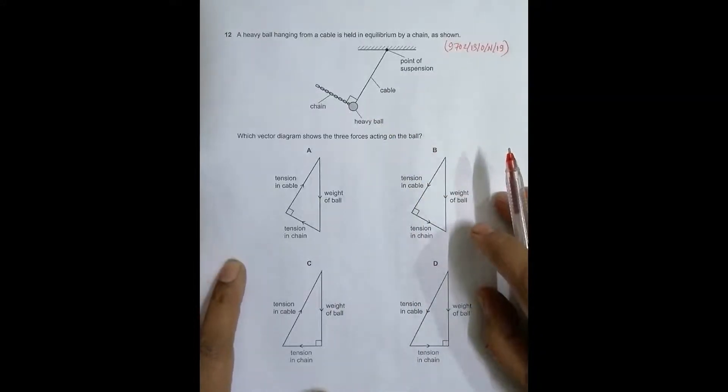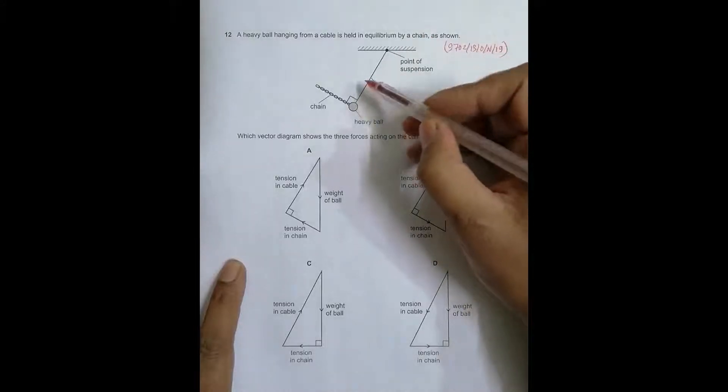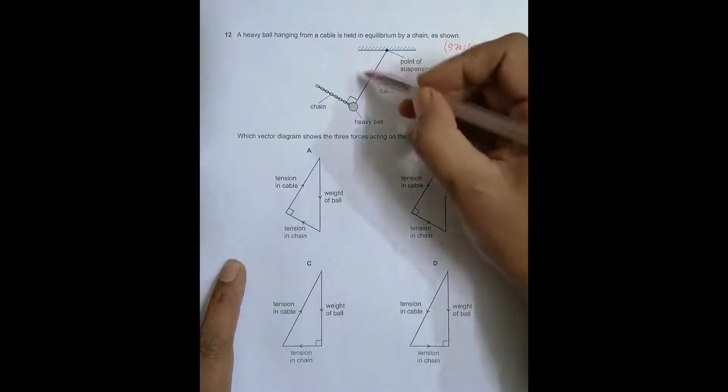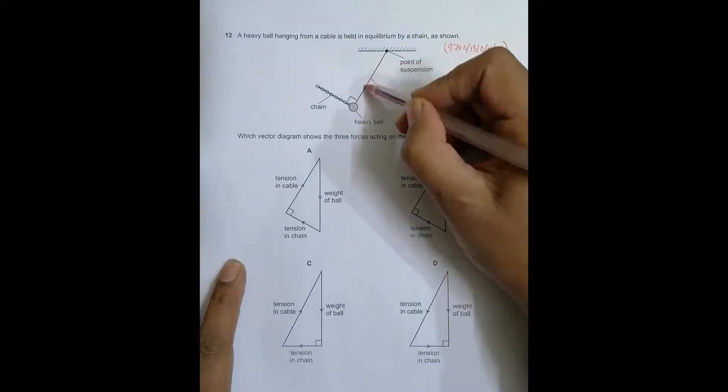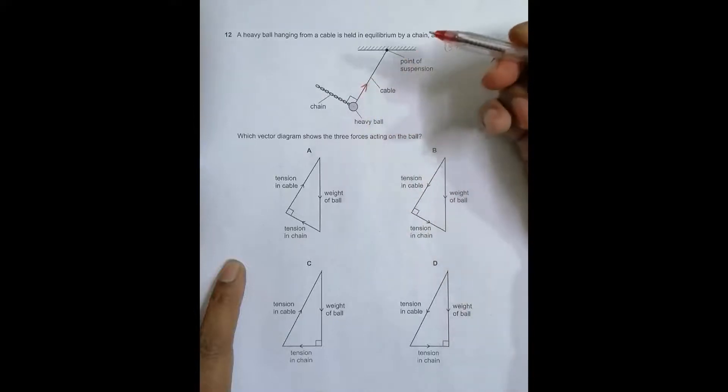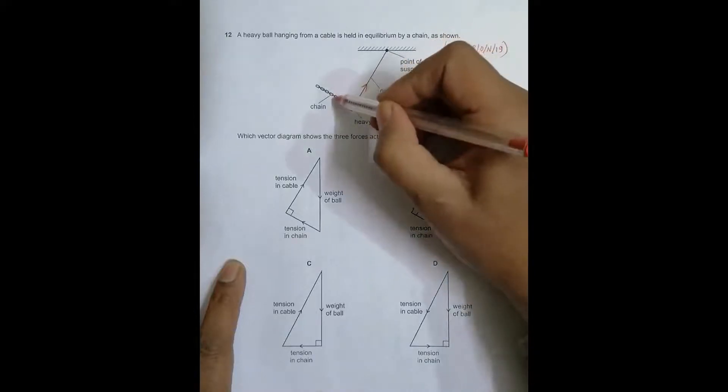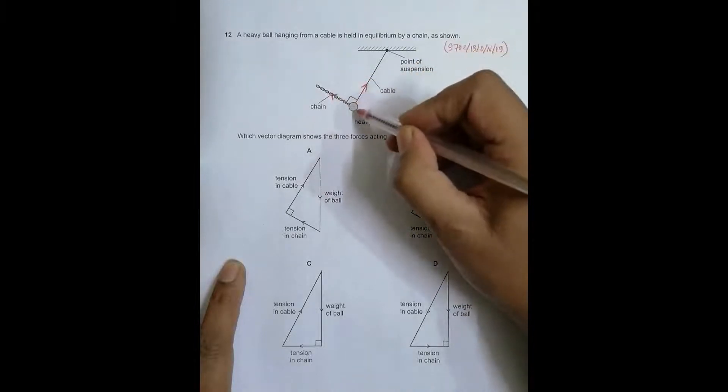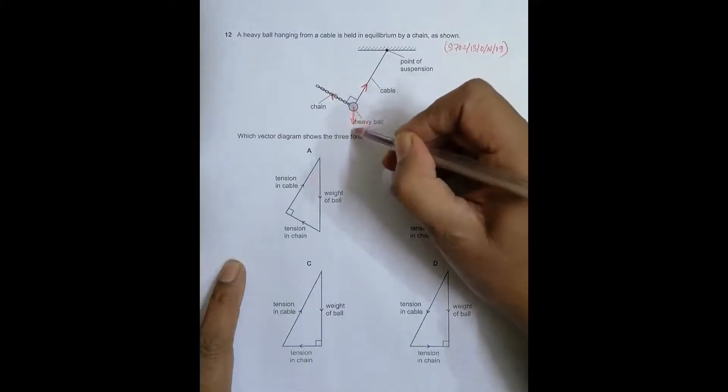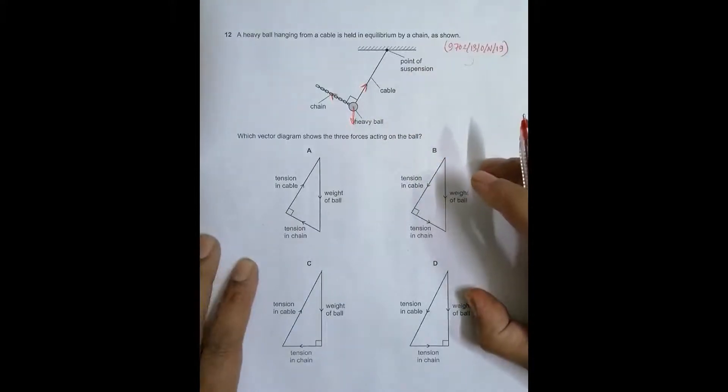The ball is here. This cable will be exerting tension T force along this direction, and there will be force along the chain in this direction on the ball. Next will be the weight, which is mg acting downward on the ball.